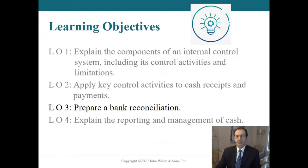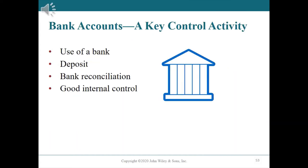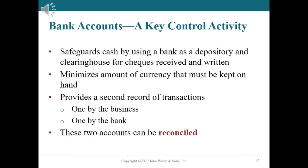Learning objective number three: prepare bank reconciliation and related journal entries. Bank accounts are a key control activity. Several of the control activities discussed in the previous section involve the use of bank accounts — depositing cash on a regular basis, comparing cash receipts with bank deposit totals, and preparing monthly bank reconciliations. The use of a bank contributes significantly to good internal control over cash.